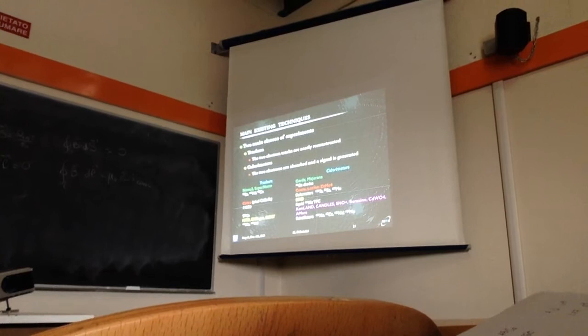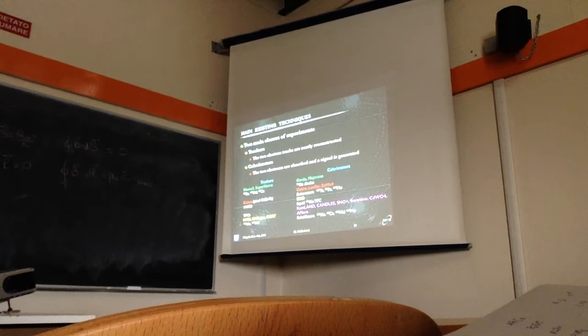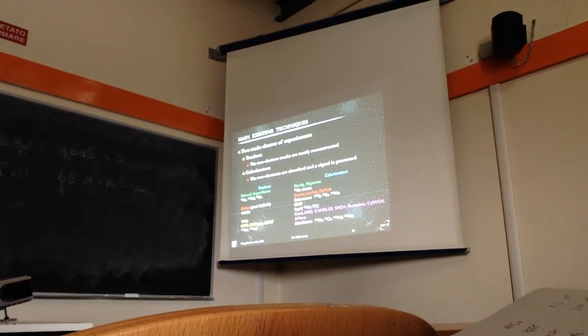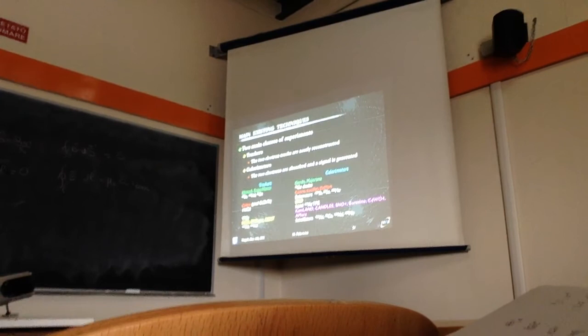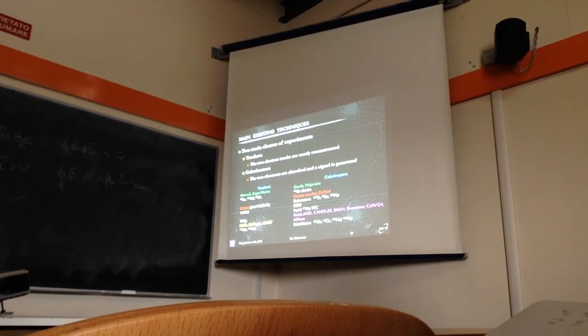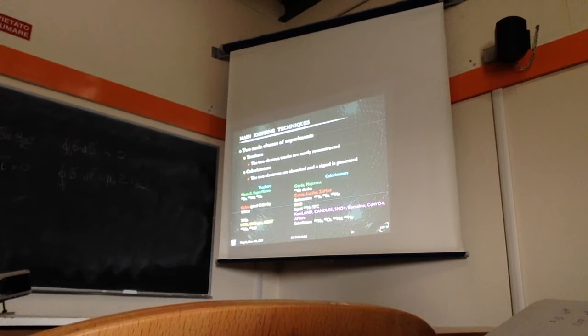The current generation of calorimeters includes GERDA, Majorana with the new diodes, and CUORE — which is the running experiment with its prototype. There are also experiments like LUCIFER with zinc molybdate crystals. EXO is a hybrid between a calorimeter and a tracking TPC, in which the two electrons are reconstructed but with less precision. Then there is liquid xenon or xenon dissolved in liquid scintillator — potential ideas from KamLAND-Zen, SNO+, and other options.